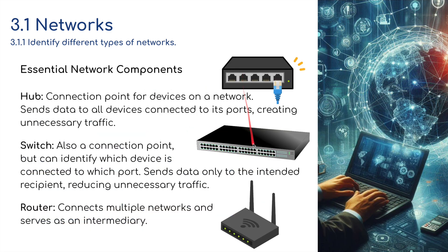We've got some components to connect different devices together. A hub is a connection point for devices on a network — you can see the ports here. It sends data to all devices connected to its ports, but it creates unnecessary traffic. A switch also acts as a connection point like a hub, but can identify which device is connected to which port, sending data only to the intended recipient, thereby reducing unnecessary traffic. A router connects multiple networks and serves as an intermediary.